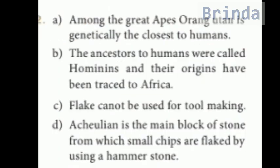Second set — A: among the great apes, Orangutan is genetically the closest to humans. B: the ancestors of humans were called hominids and their origins have been traced to Africa. C: flakes cannot be used for tool making. D: the main block of stone from which small chips are flaked by using a hammer stone. The answer is B — the ancestors of humans were called hominids and their origins have been traced to Africa.